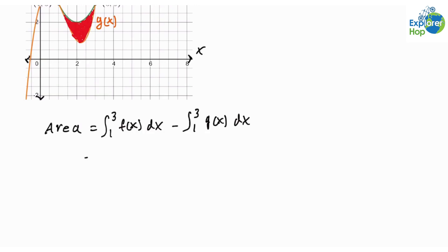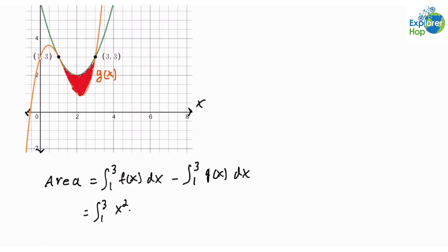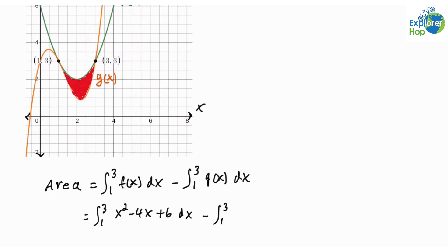This is equal to the definite integral from 1 to 3 of f(x) dx, which is x² - 4x + 6, minus the definite integral from 1 to 3 of g(x) dx, which is x³ - 4x² + 3x + 3 dx.